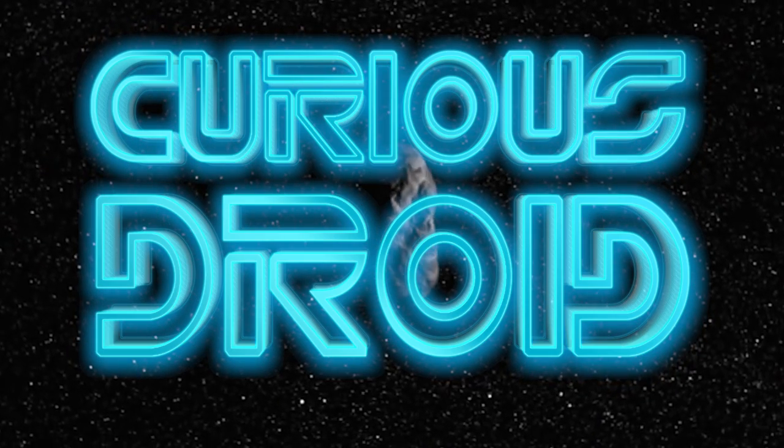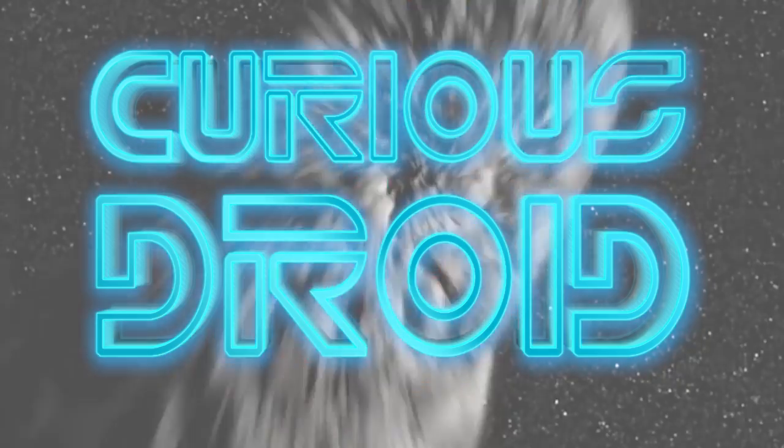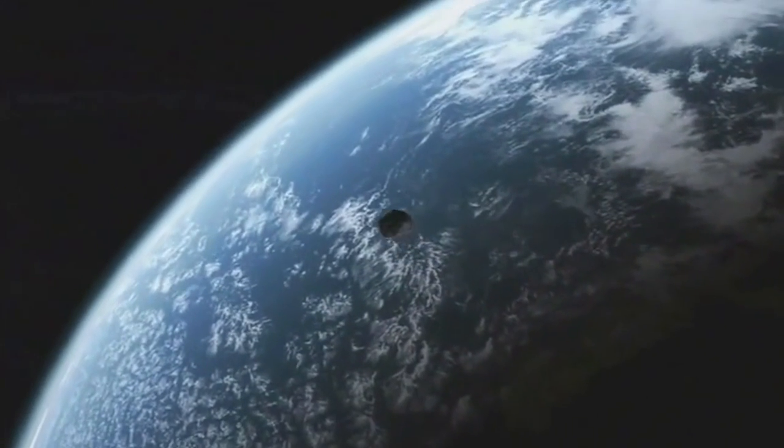On average the Earth is hit once every two weeks by an asteroid measuring a couple of meters or so across. In fact the Earth is being hit all the time by small meteorites but luckily most of these small objects burn up in the Earth's atmosphere appearing to us as shooting stars.